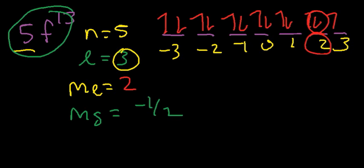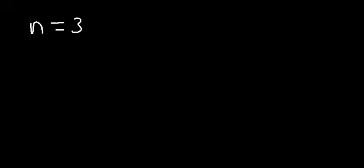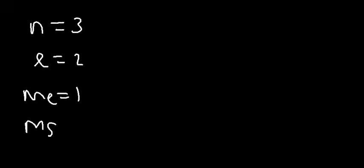Pauli's exclusion principle states that no two electrons can have the same set of four quantum numbers. As you can see, these quantum numbers are unique for each electron — each electron has a unique set of four quantum numbers. So if you're given these four quantum numbers, you can identify what electron we're talking about.